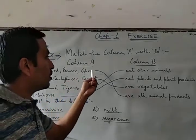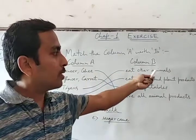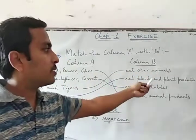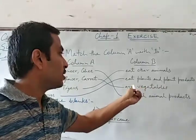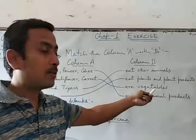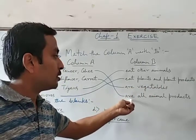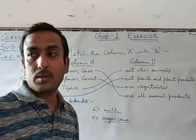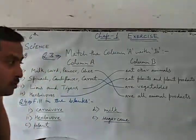Column B: eat other animals, eat plants and plant products, are vegetables, and are all animal products.